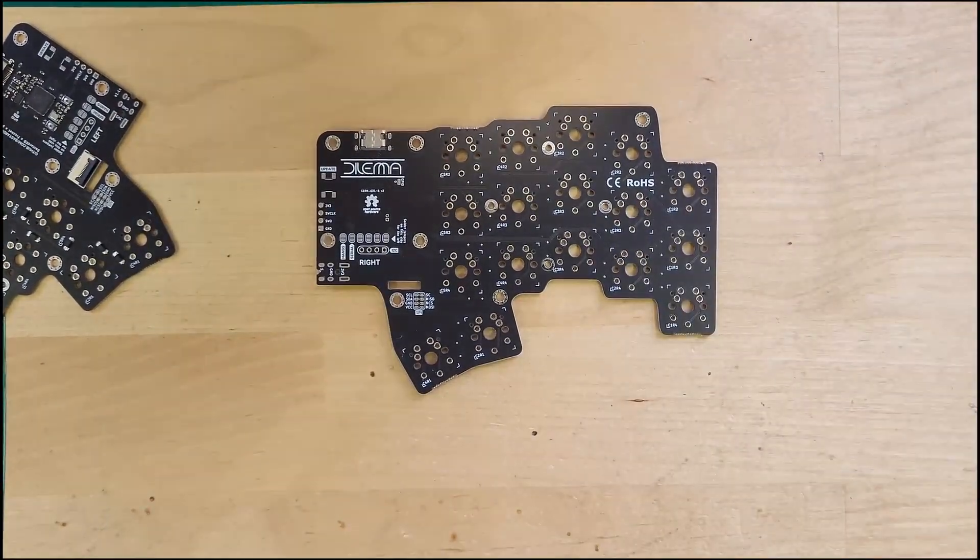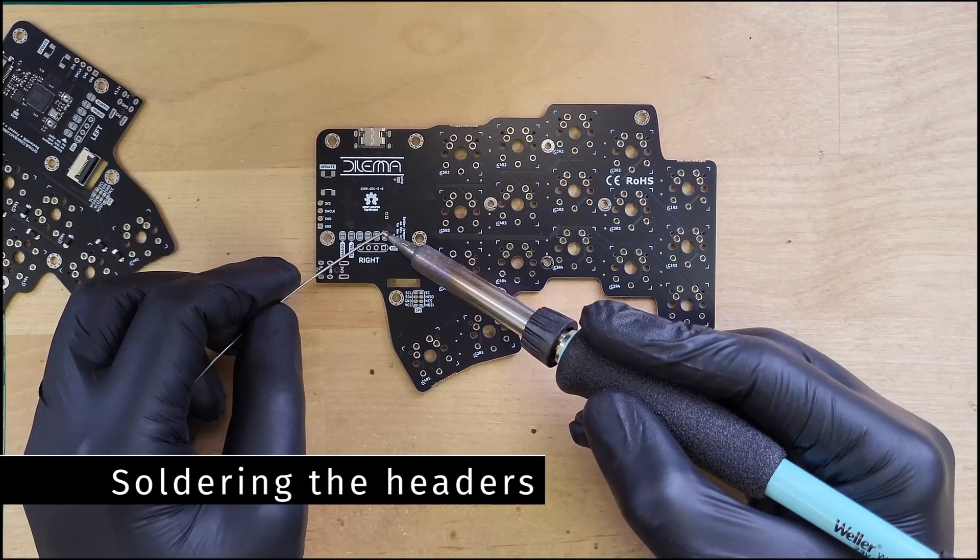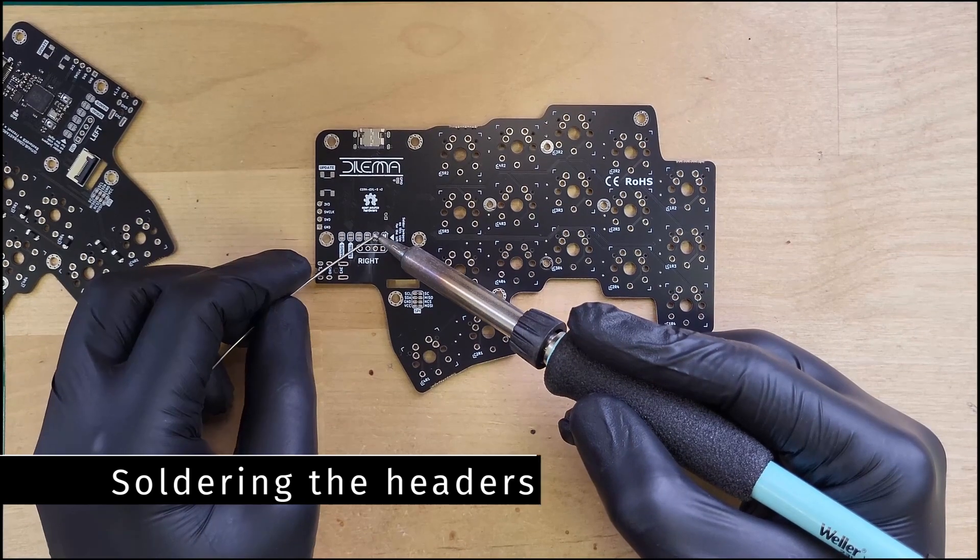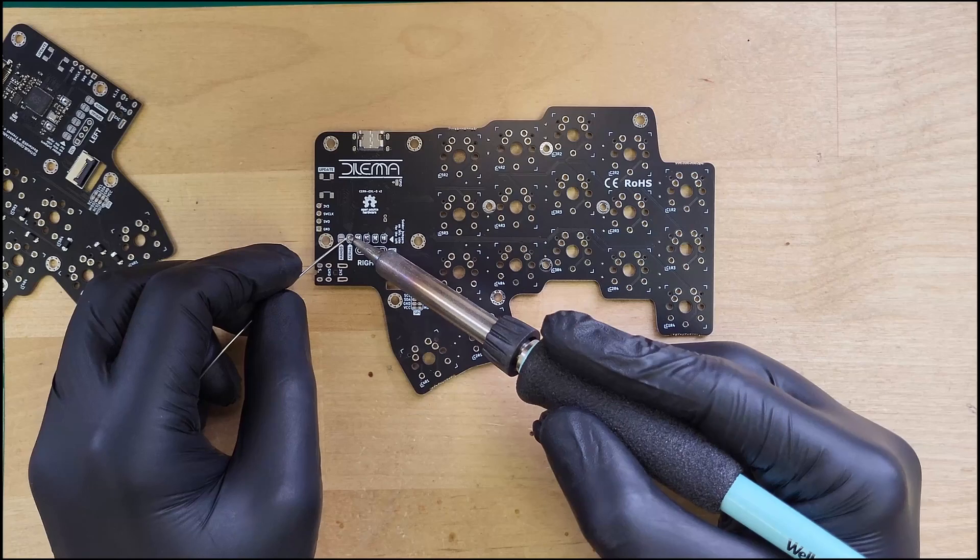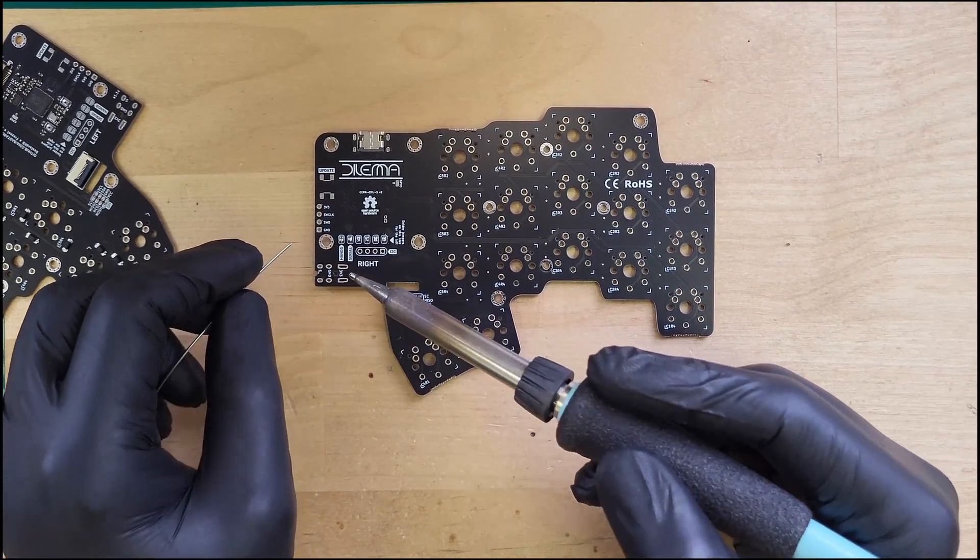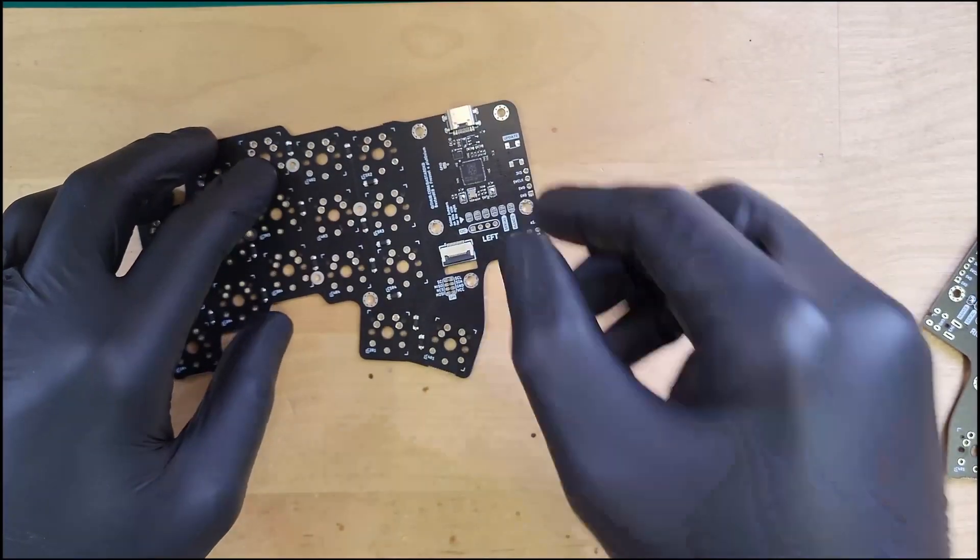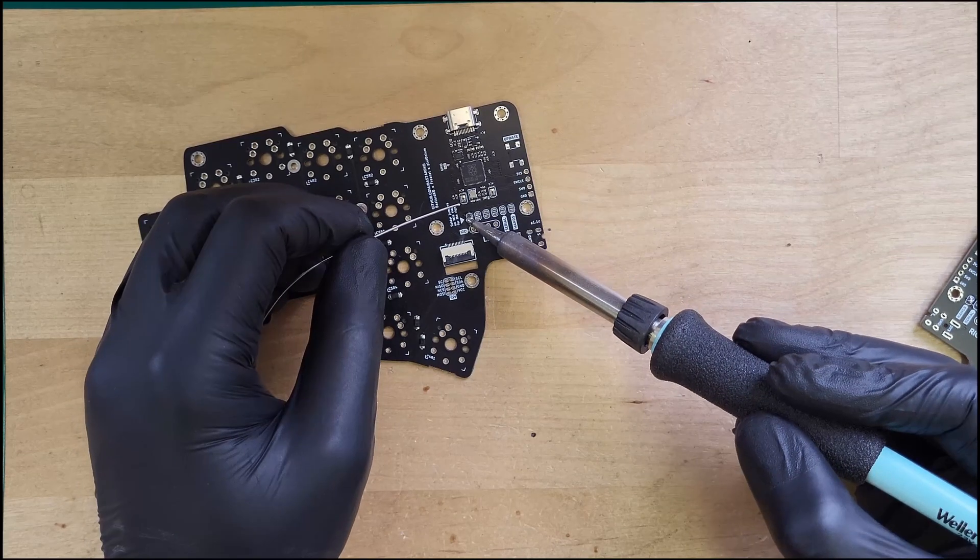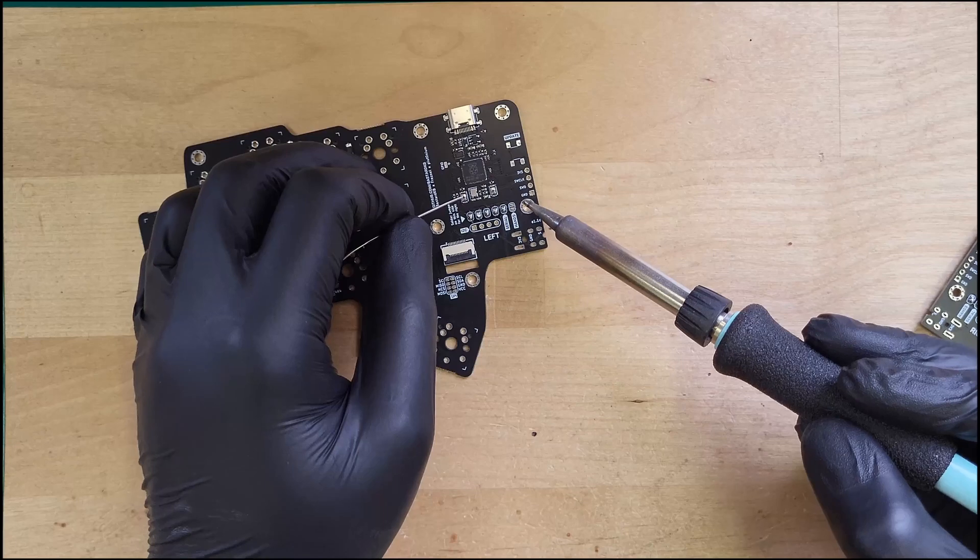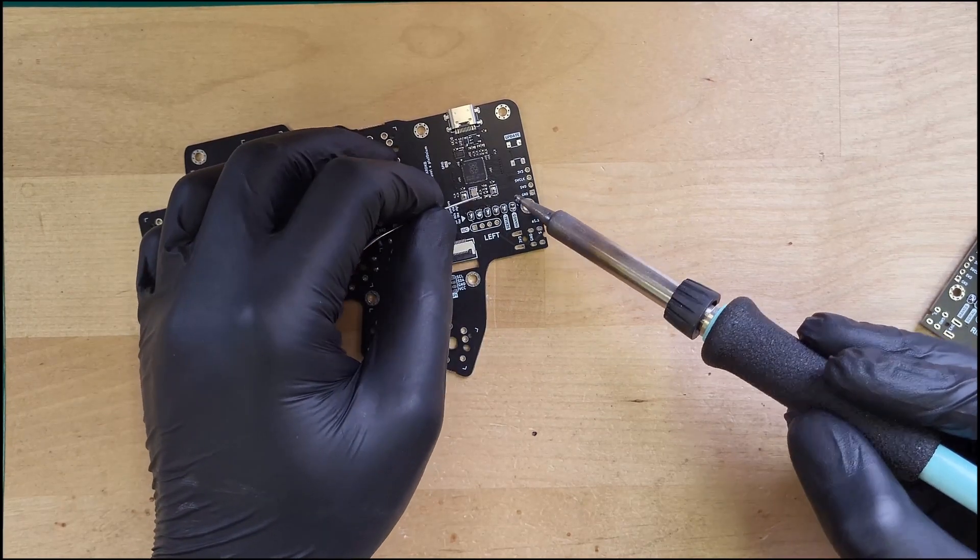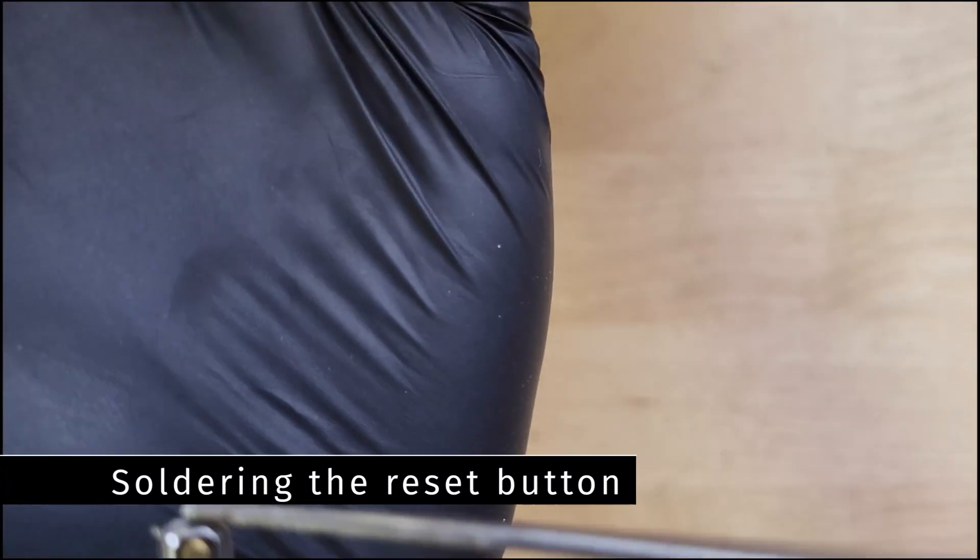We will start by soldering the jumpers on each side. Next to the jumpers are some labels that say solder jumpers on this side for the right or for the left. Here we are starting with the left plate and soldering the jumpers on the underside of the PCB, the bottom side. This is why the right label is visible because we flipped the plate. Then we move to the other side, what will be the right side of the keyboard. Note here that we solder the jumpers under it, and this is why the left label is visible.